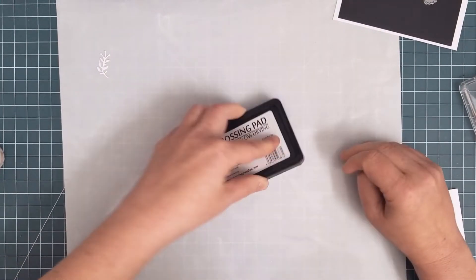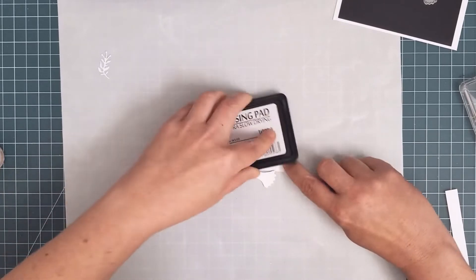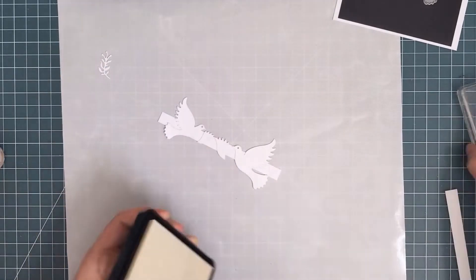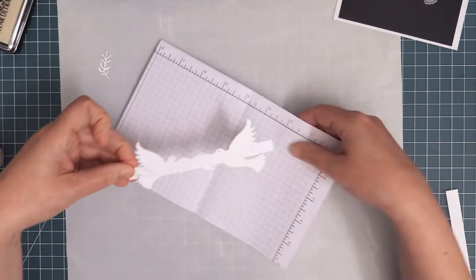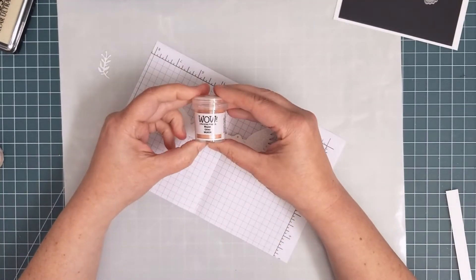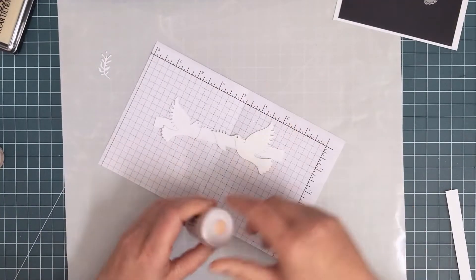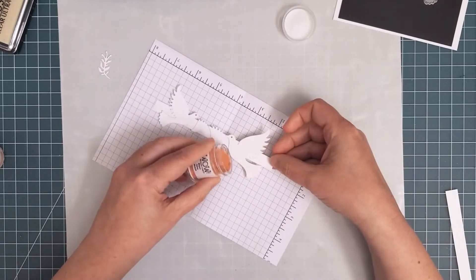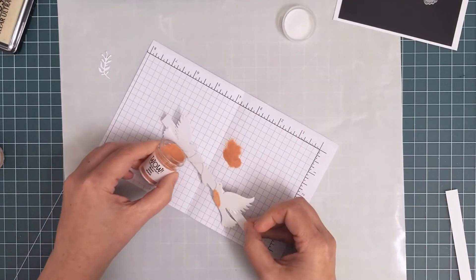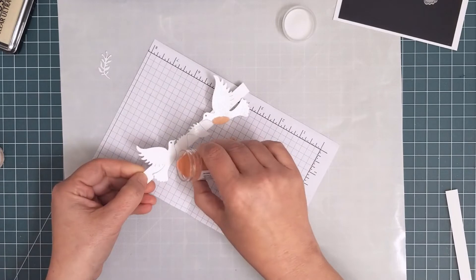Next I pressed WOW embossing ink all over the birds and their wings, making sure they were really well coated so that the powder would stick all over. I used a little bit of Mayan glints to make their bellies a little pink. The first one was easy to put powder just in that spot but the second one was a bit trickier due to the angle. I got it in the end.